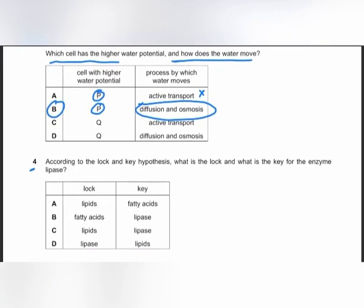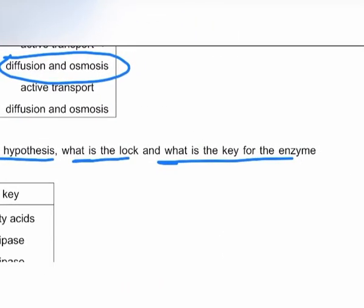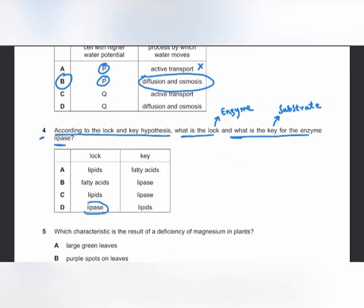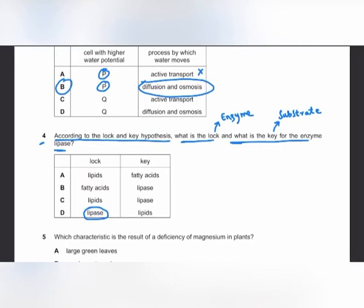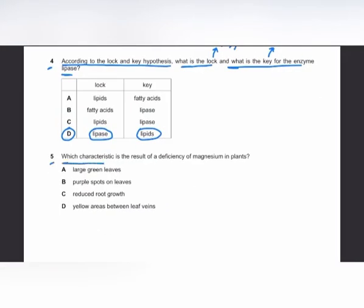MCQ number 4: according to the lock-and-key hypothesis, for the enzyme lipase, the enzyme is the lock and the substrate is the key. Lipase is the enzyme (the lock), and lipids are the substrate (the key), since lipase breaks down lipids. The answer is D.